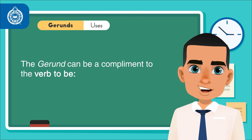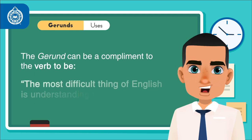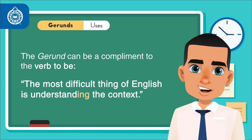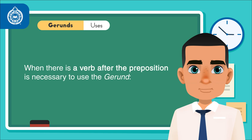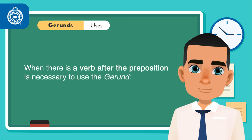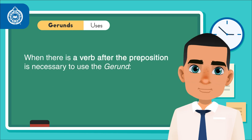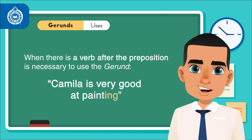The gerund can be a complement to the verb to be. Example: the most difficult thing of English is understanding the context. When there is a verb after a preposition, it's necessary to use the gerund. Like: Camila is very good at painting.